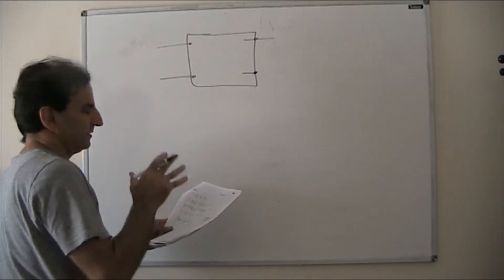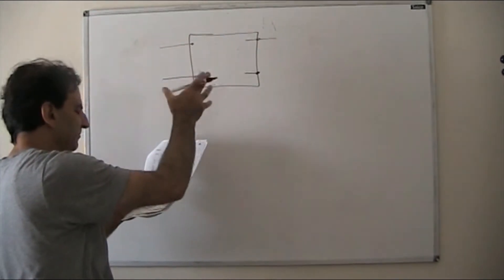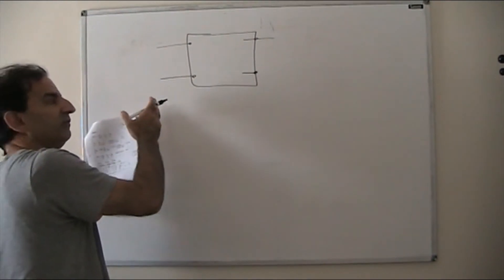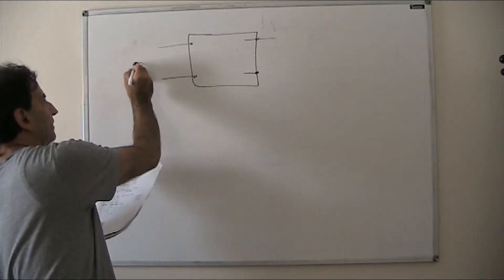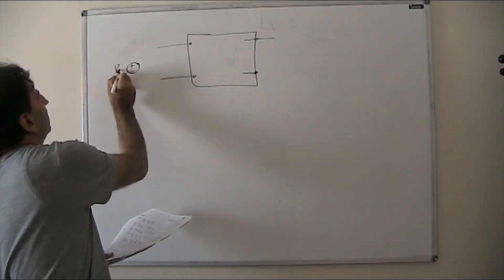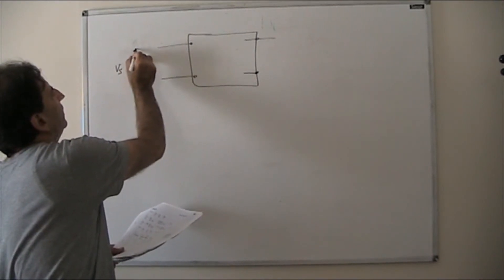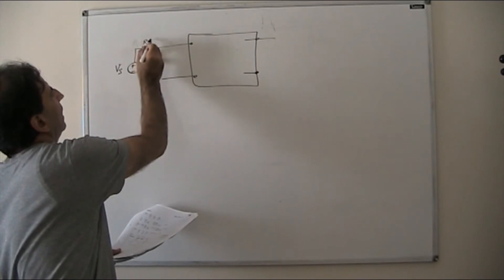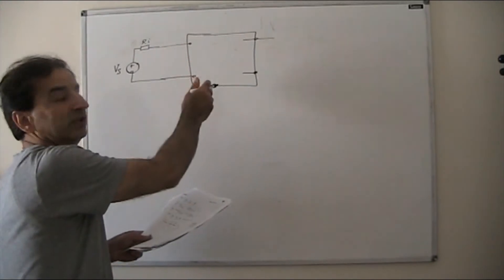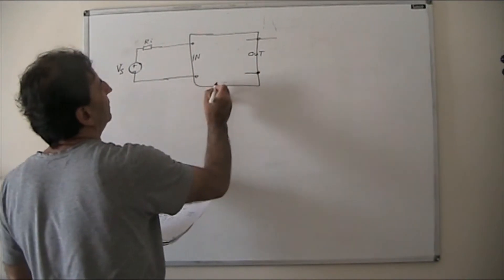For the input, the amplifier would be seen from the source point of view. We will have a voltage supply — call it VS — and that itself has its own internal resistance RI. That is connected to the input, so this side is input and this side is output of the amplifier.